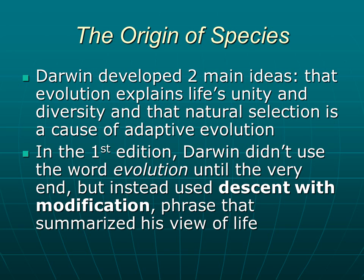Within The Origin of Species, Darwin developed two main ideas: that evolution explains life's unity and diversity, and that natural selection is a cause of adaptive evolution. It's important to underline that natural selection is a cause of evolution, because a lot of times people confuse the two. In the first edition, Darwin didn't even use the word evolution until the very end. Instead, he used the phrase 'descent with modification,' which summarized his view that animals descend and modify gradually over time.